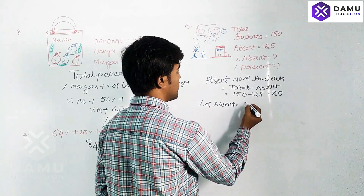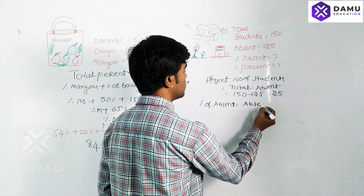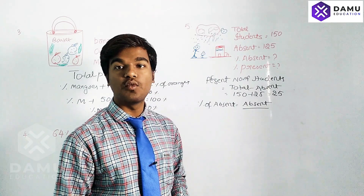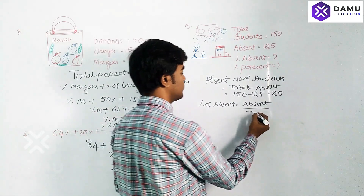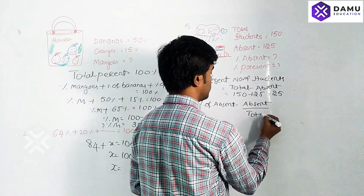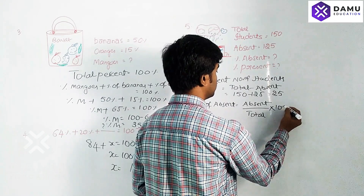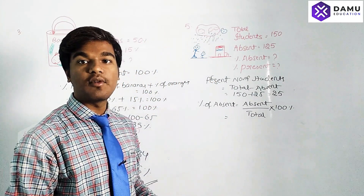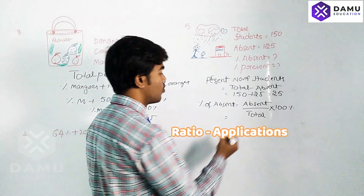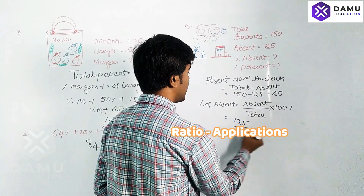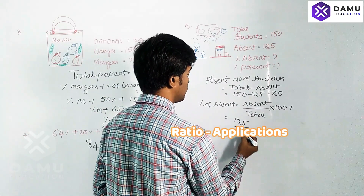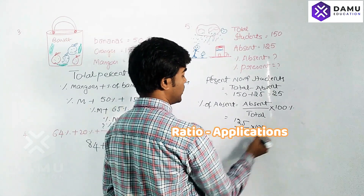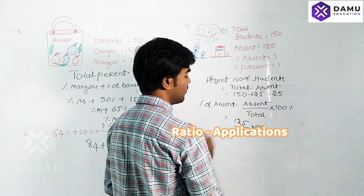The percentage of absent students equals absent number of students divided by total students, multiplied by 100. So that is 125 divided by 150, multiplied by 100.